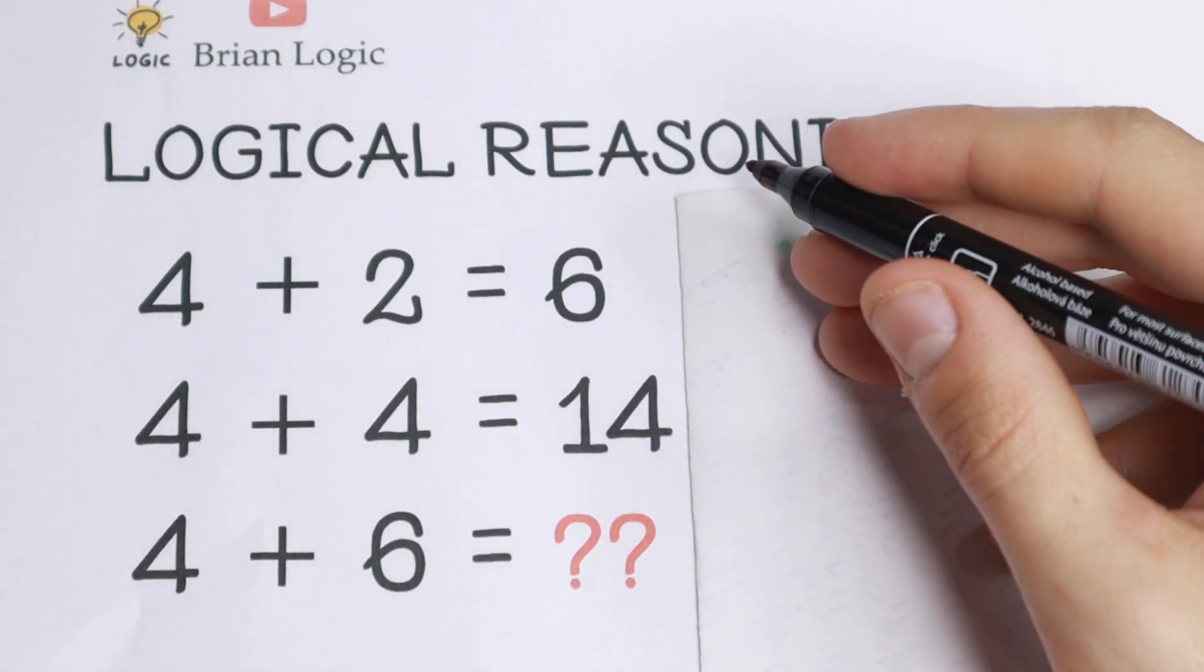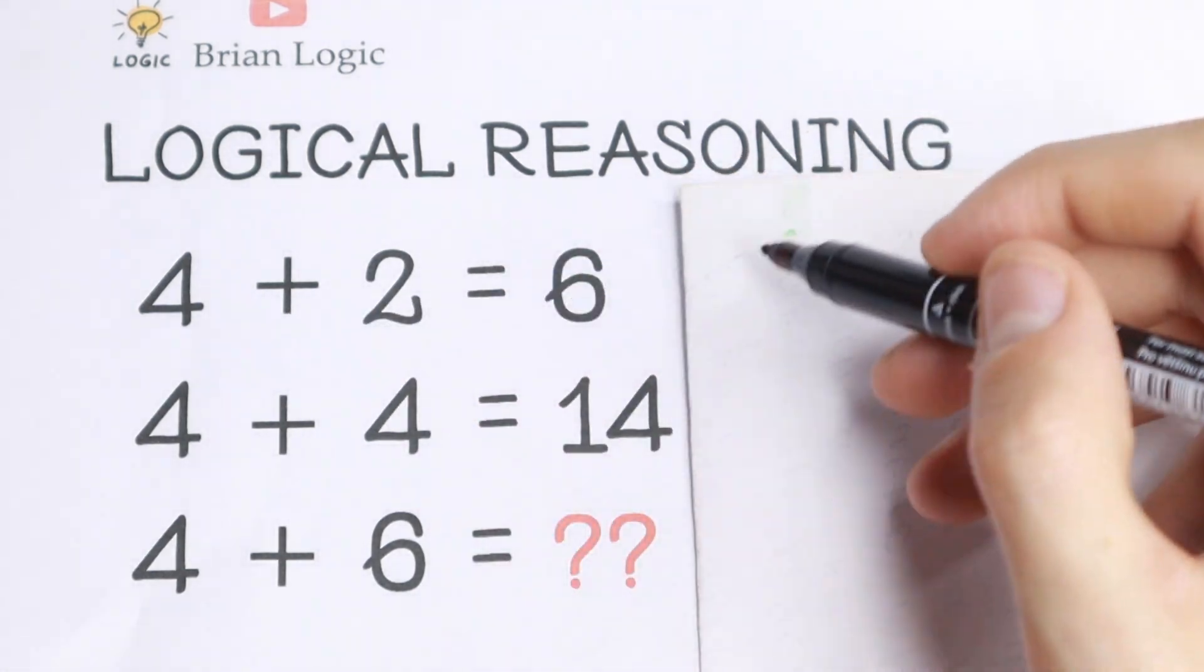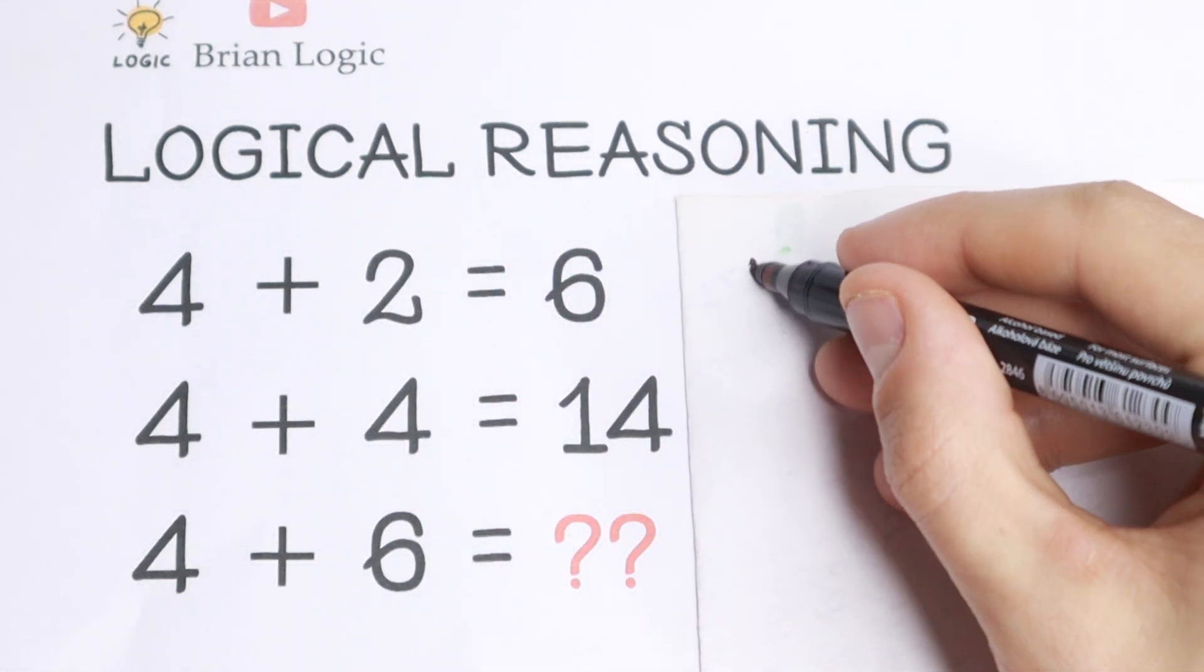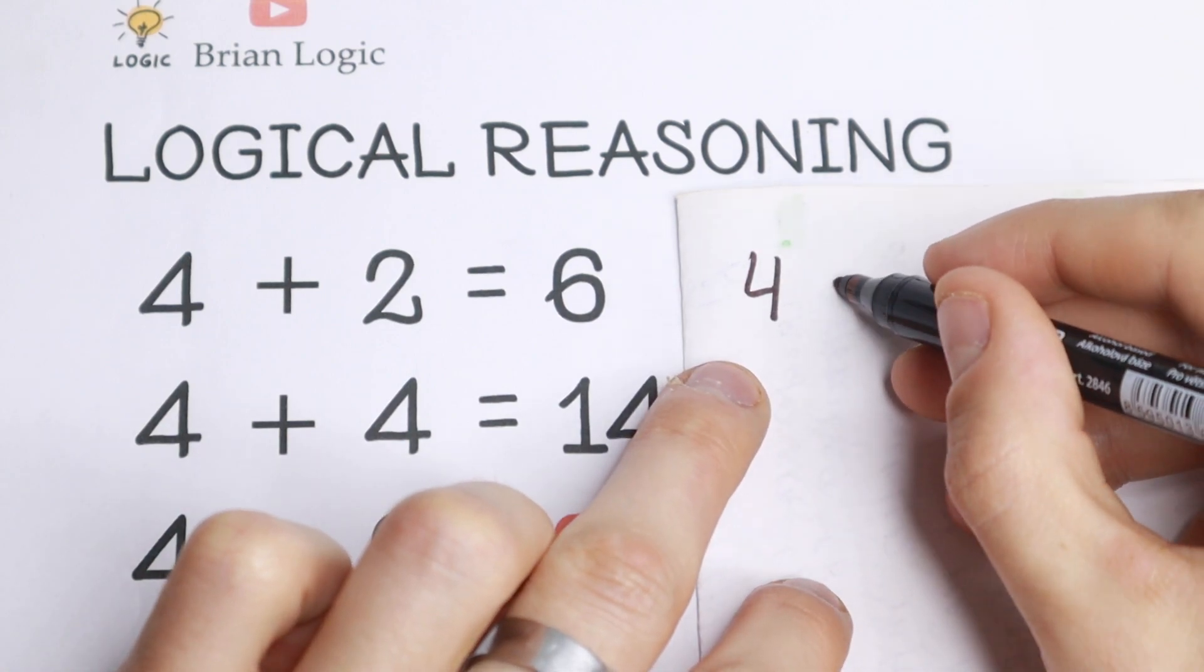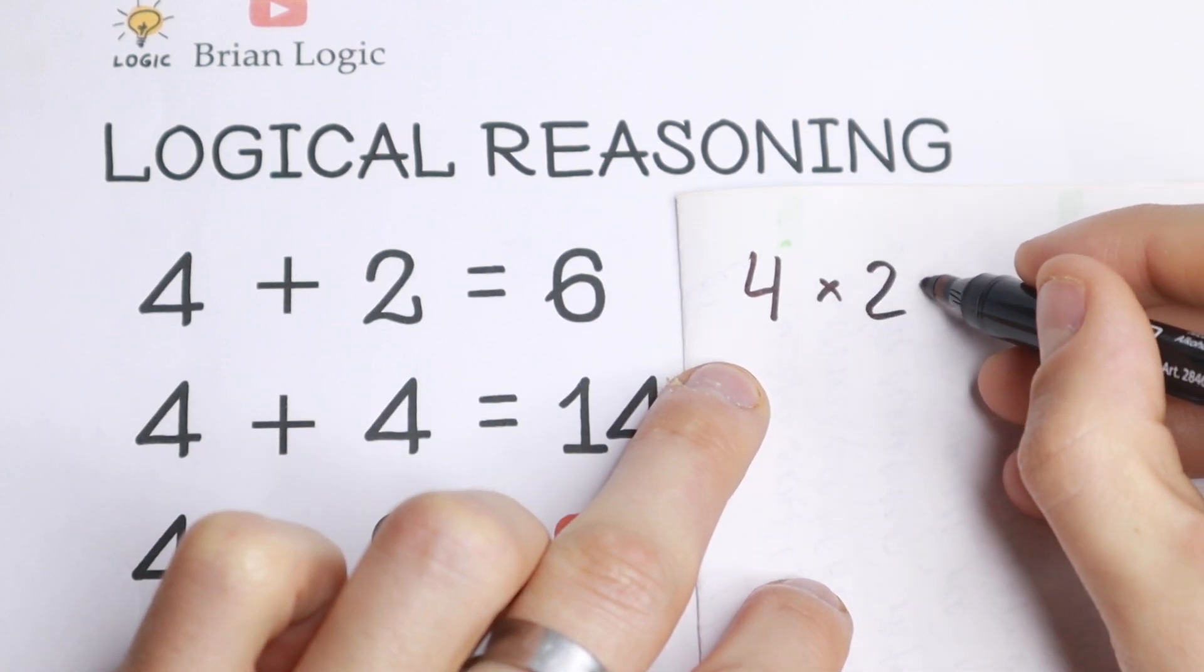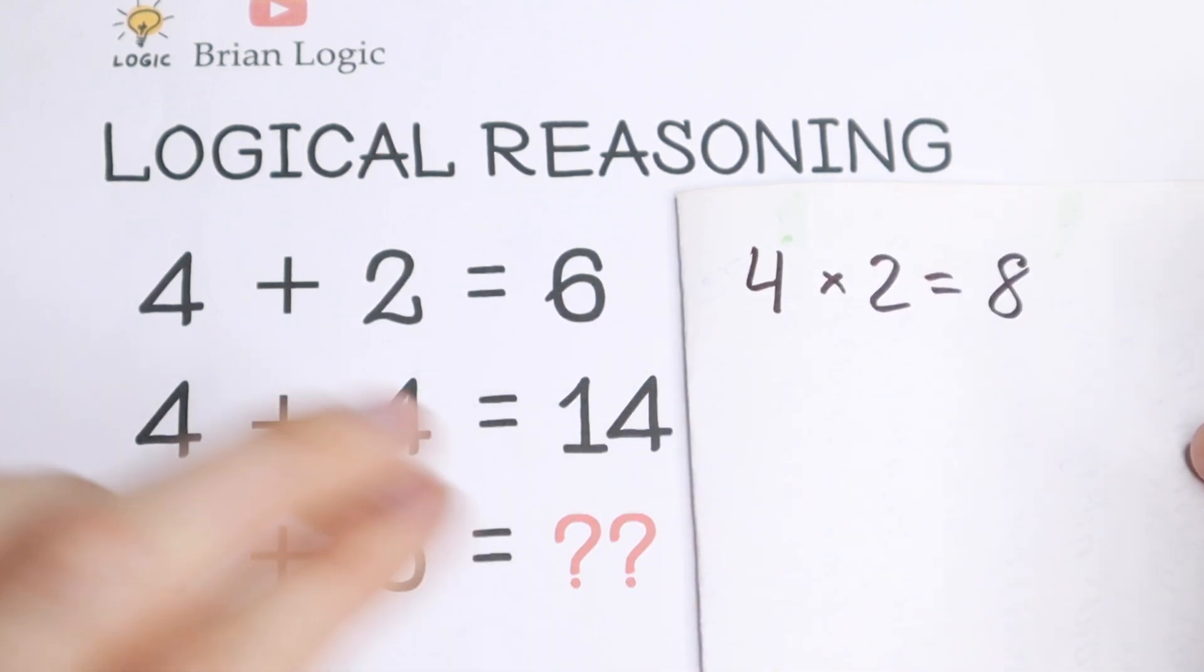I see right now a really good pattern between all of these. Take a look. If we multiply these two numbers, we will have 4 times 2, we will have 8. So just multiply these two numbers, we will have 8.